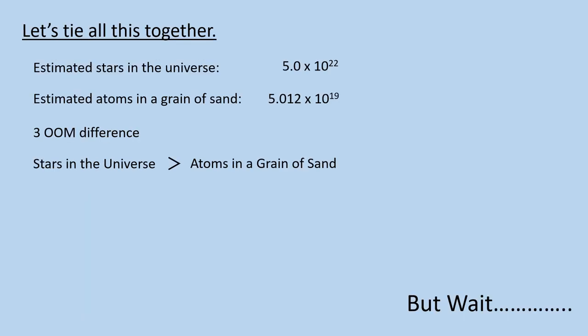Okay, now let's use our knowledge of orders of magnitude to answer our question of stars versus atoms. We see that we have 5 times 10 to the 22nd stars in the universe versus 5.012 times 10 to the 19th atoms in our grain of sand. Right off we can see that 10 to the 22nd is a larger number than 10 to the 19th by three orders of magnitude. In other words, 22 minus 19. And there you have it. We've answered the question. There are more stars in the universe than there are atoms in a grain of sand.